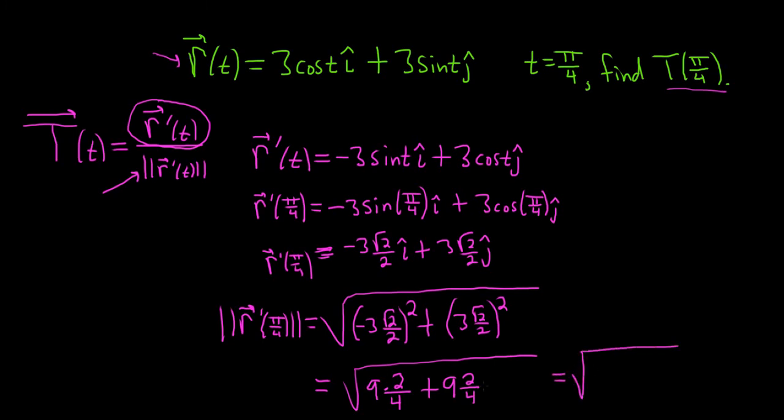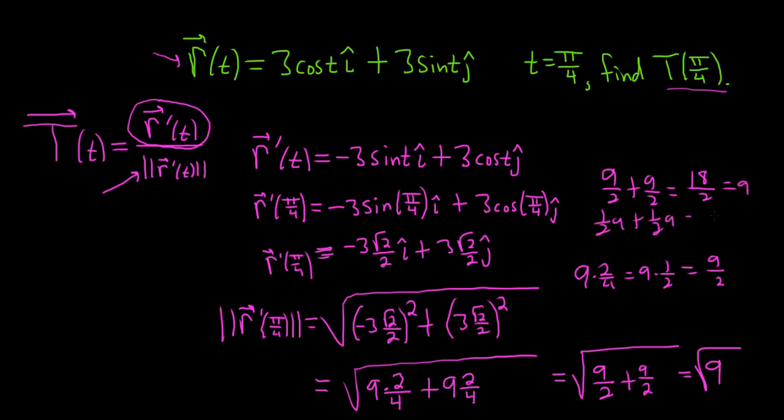This is the square root of 9 times 2 fourths, which is 9 times 1 half. So we get 9 halves plus 9 halves, which is 9. Half of 9 plus half of 9 is 9. You can also think of it as 9 over 2 plus 9 over 2, which is 18 over 2, which is 9. Or you can think of it as 1 half times 9 plus 1 half times 9 is 1 times 9, which is 9, because 1 half plus 1 half is a whole. So the square root of 9 is 3.